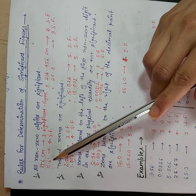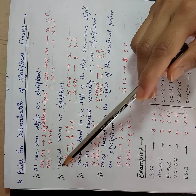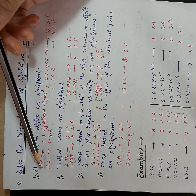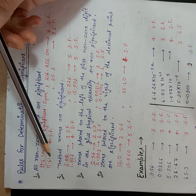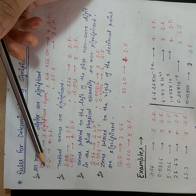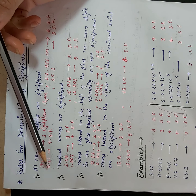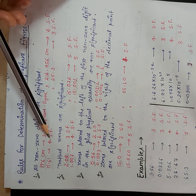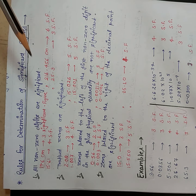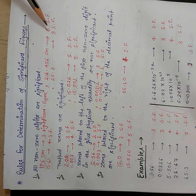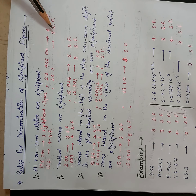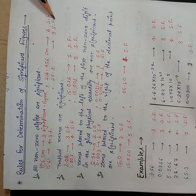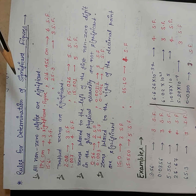Similarly, 15.61 — in this number no zero is present. All the given digits are non-zero digits, that's why four significant figures. Similarly, here six significant figures and here only three significant figures are present.